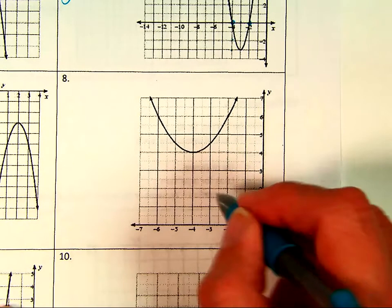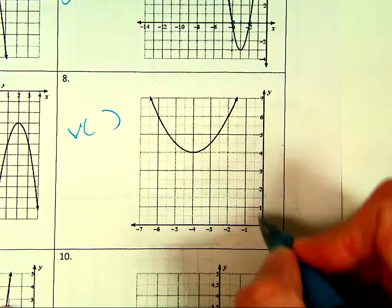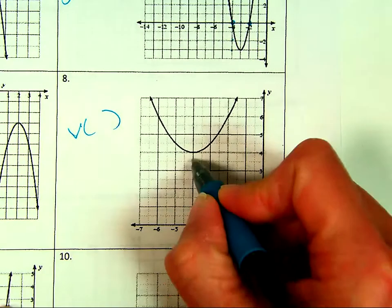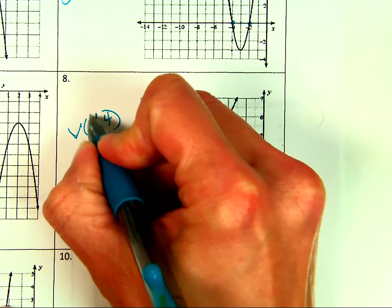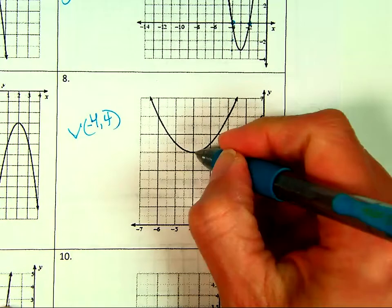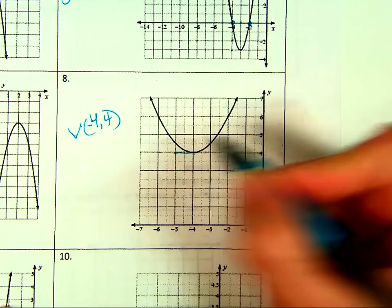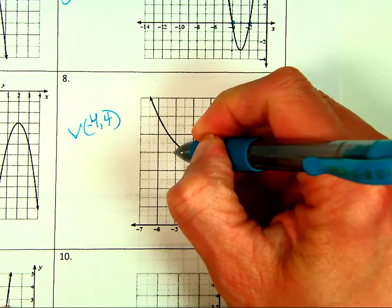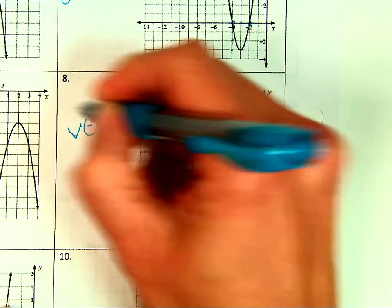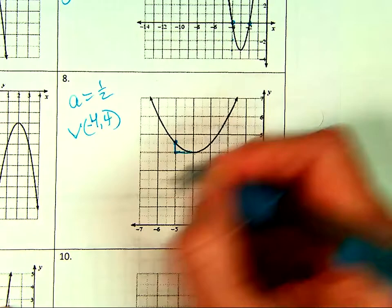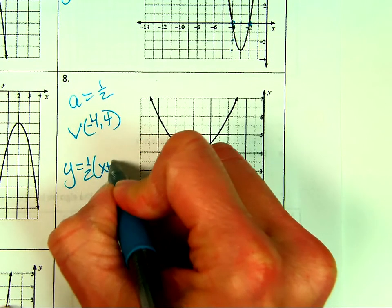Next graph: vertex is (−4, 4). Going over 1, it looks like up one half. So A is one half, it opens up. Y = ½(x + 4)² + 4.